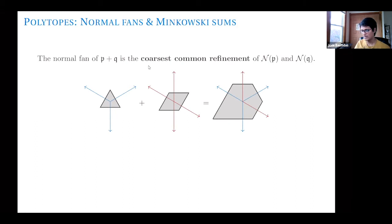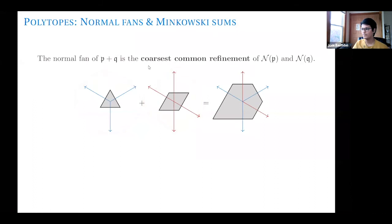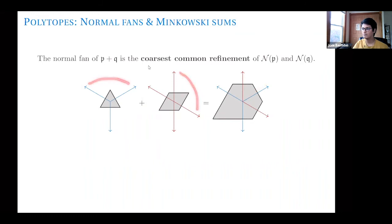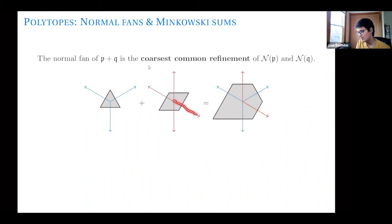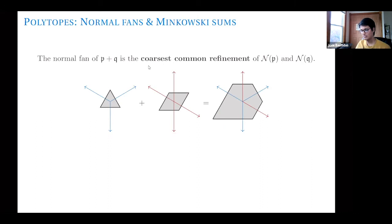One very nice property that normal fans and Minkowski sums satisfy is: if I take two polytopes P and Q, the normal fan of their Minkowski sum P + Q is the coarsest common refinement of the normal fans of P and Q. This means to obtain all cones in the normal fan of P + Q, I take all possible intersections of a cone from P's fan and a cone from Q's fan. For example, this two-dimensional cone is the intersection of a cone from P and a cone from Q. Every cone in the sum can be written as such an intersection.